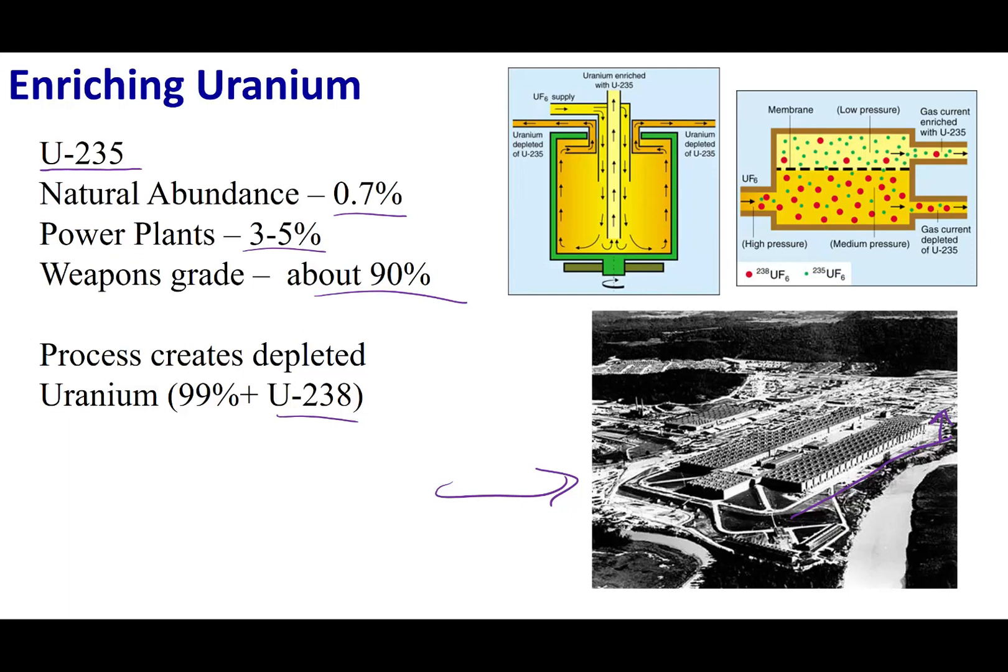Now, the way they did this is they made uranium into a gaseous compound, UF6. Now, we have uranium-238 and we have uranium-235. The uranium-235, the uranium that we want, is lighter. So it moves slightly faster than the uranium-238. It moves about 0.4% faster.